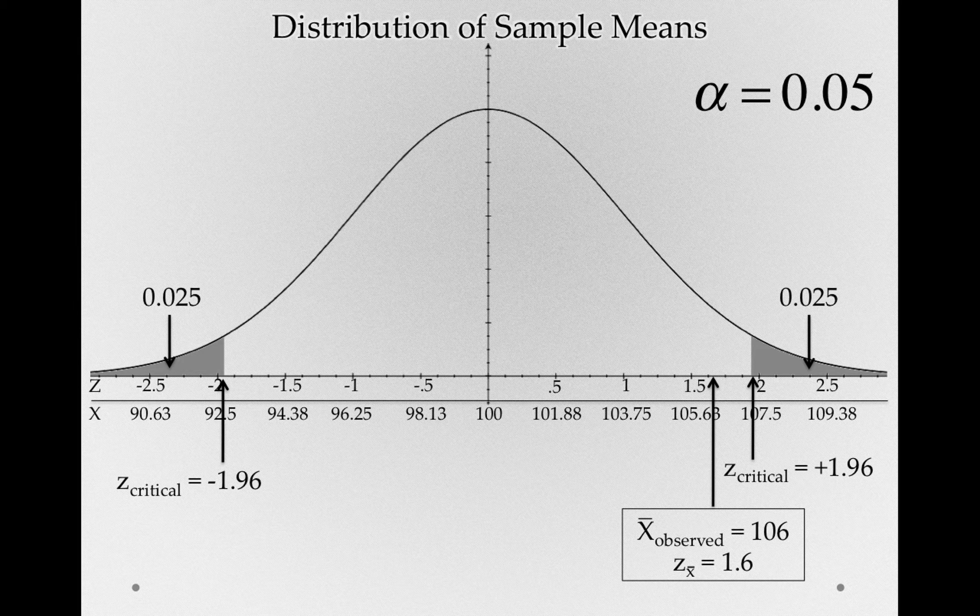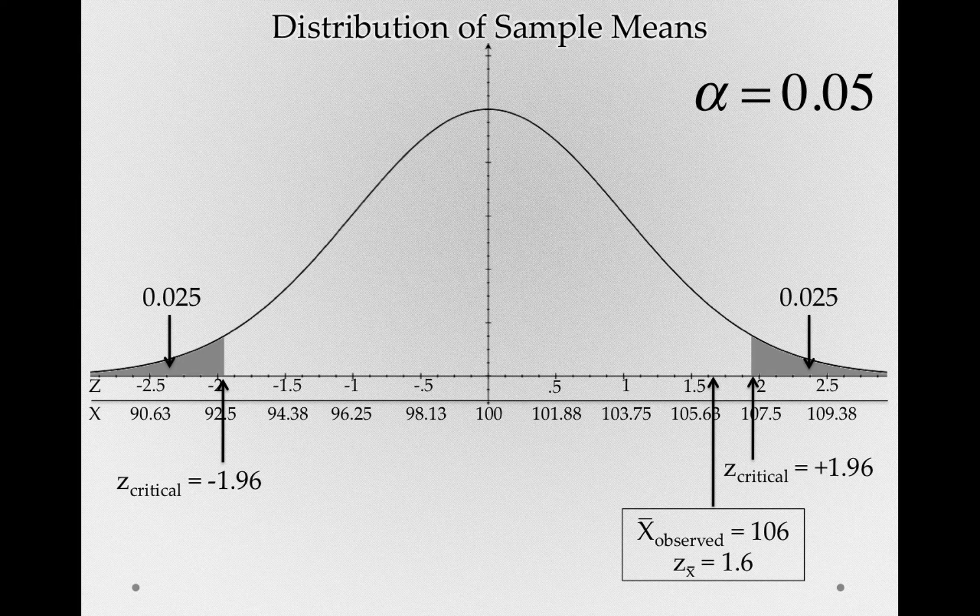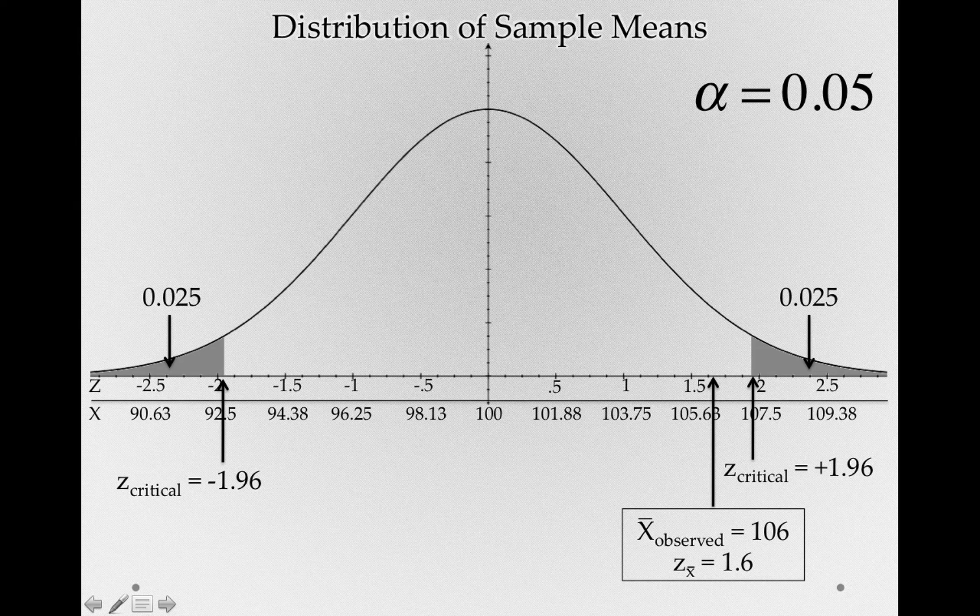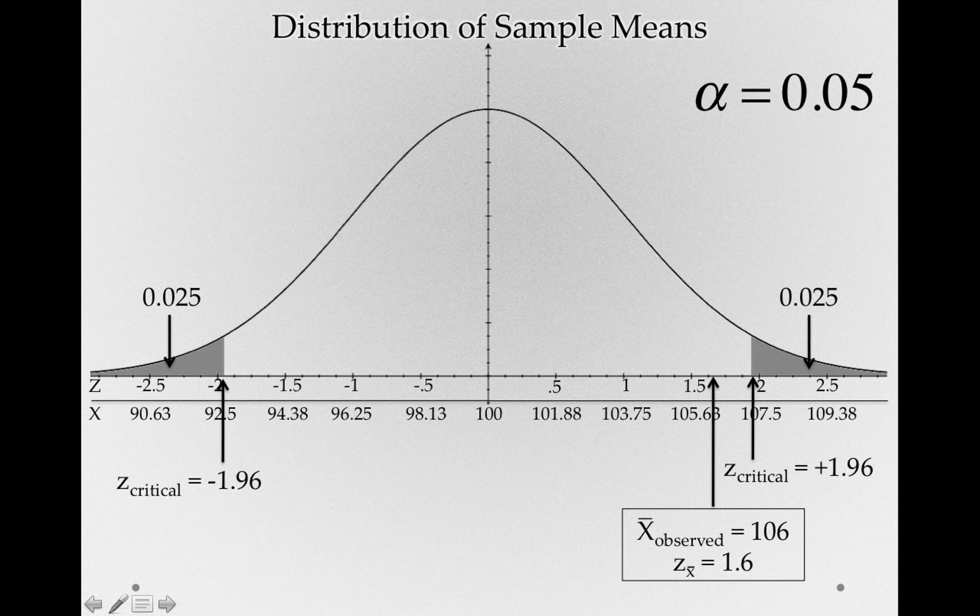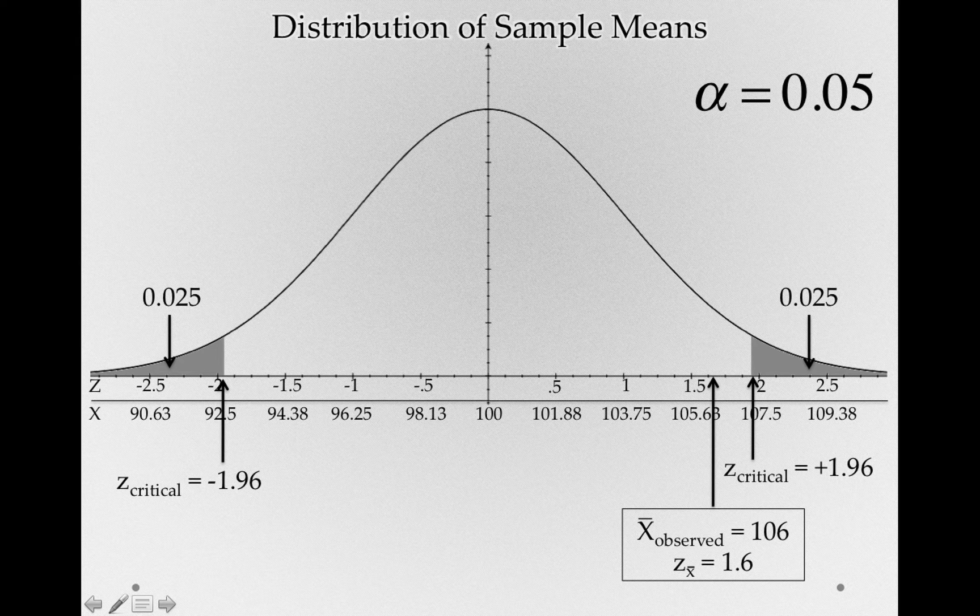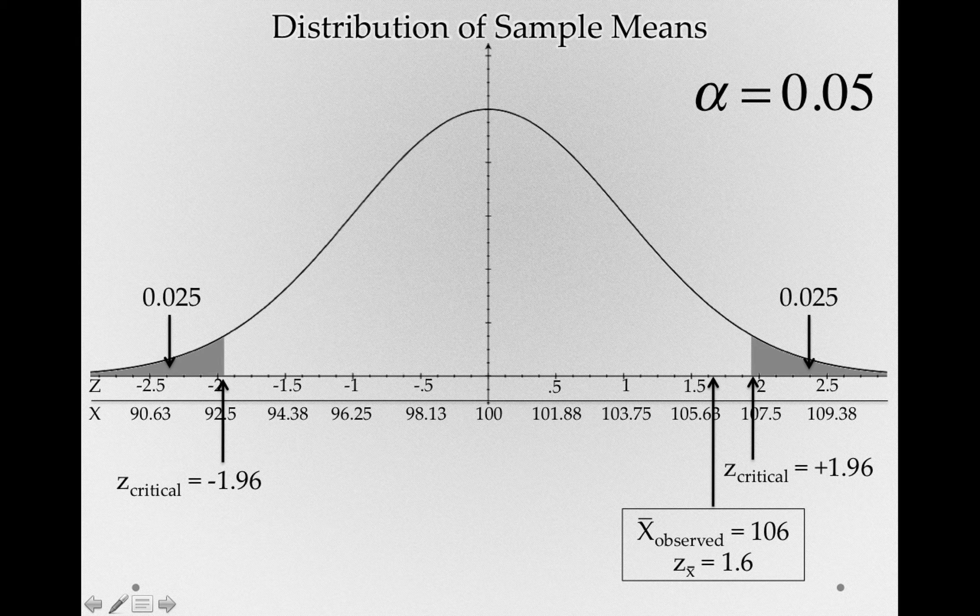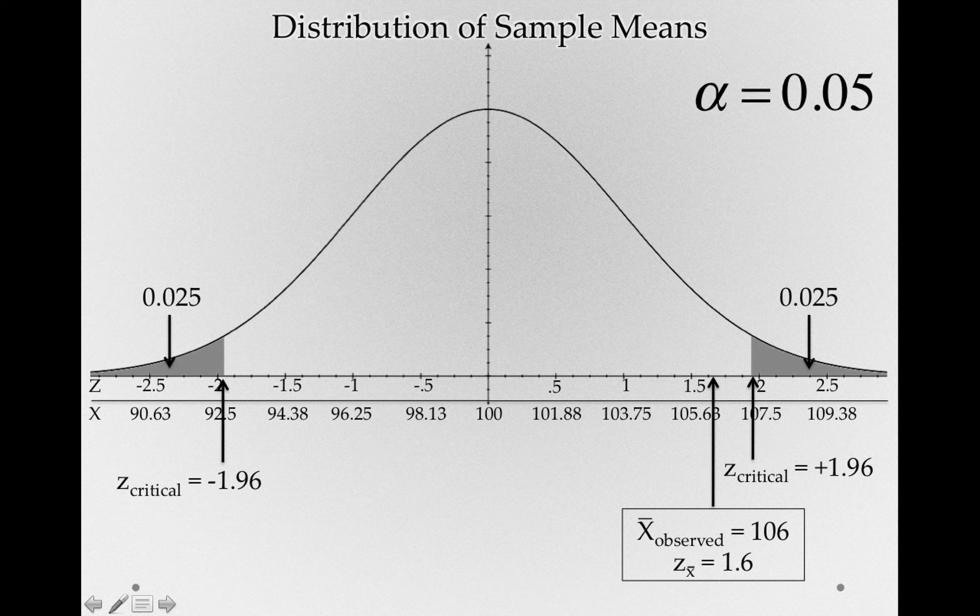So we can already see that we haven't landed our sample mean in the critical region, which in our case is akin to saying that our sample is not extreme enough, based on our standard of evidence we established, to reject the null hypothesis as reasonable.